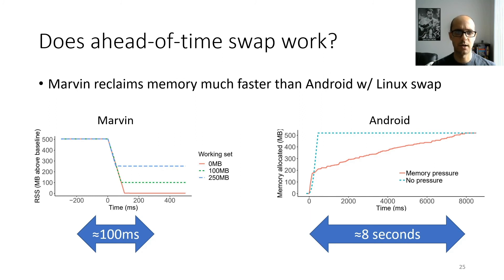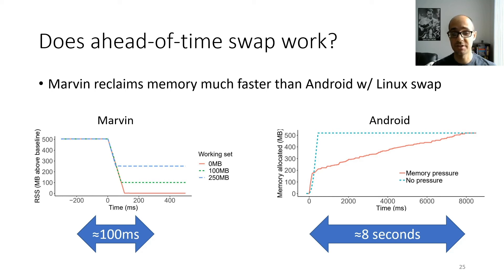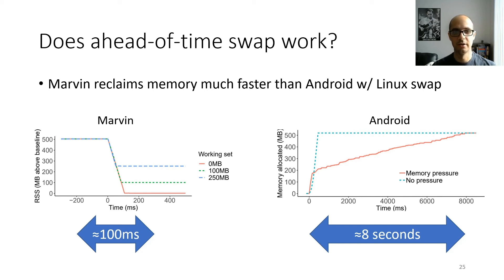To investigate whether ahead-of-time swap works, we measured how long it took our Marvin prototype to reclaim memory. We found it took around 100 milliseconds to reclaim 500 megabytes of memory. Comparing that to our earlier measurement of close to eight seconds to allocate 500 megabytes on Android with a Linux swap file under memory pressure, Marvin's reclamation time is much faster — though this isn't quite an apples-to-apples comparison, it does illustrate the big difference in order of magnitude.